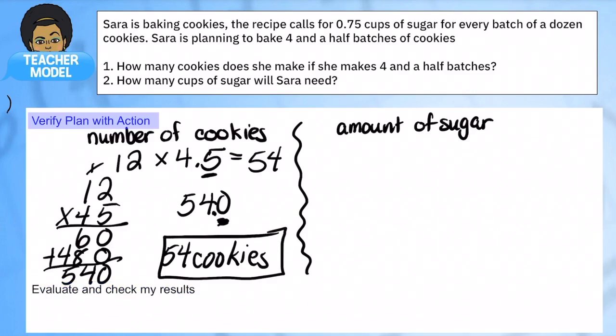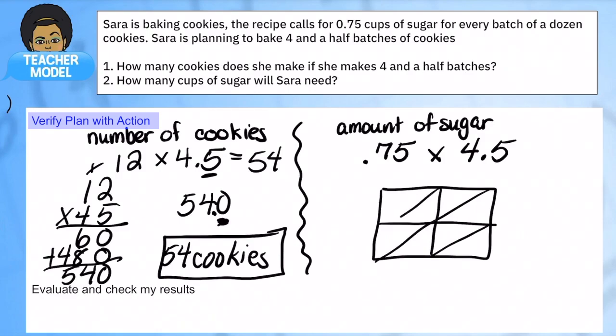And the second question was how much sugar will she need to make four and a half batches of cookies? So again, our multiplication sentence is going to be seventy five hundredths times four and five tenths batches. And this time I'm going to use, you know, I'm going to use lattice. I like lattice a lot. I know it's not a favorite of many parents, but I know lots of kids like using it. So we're going to use that.